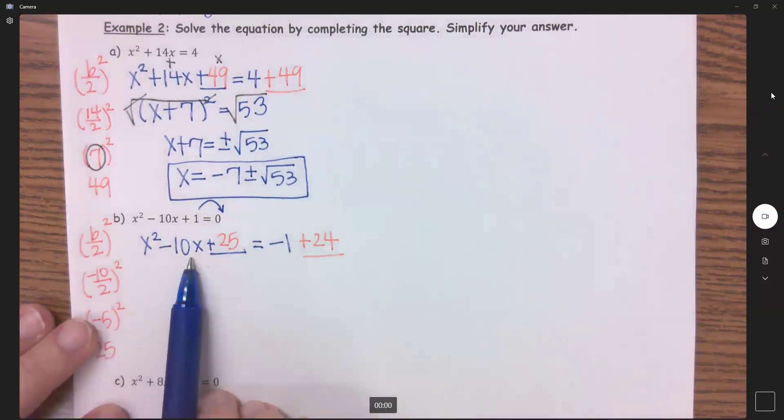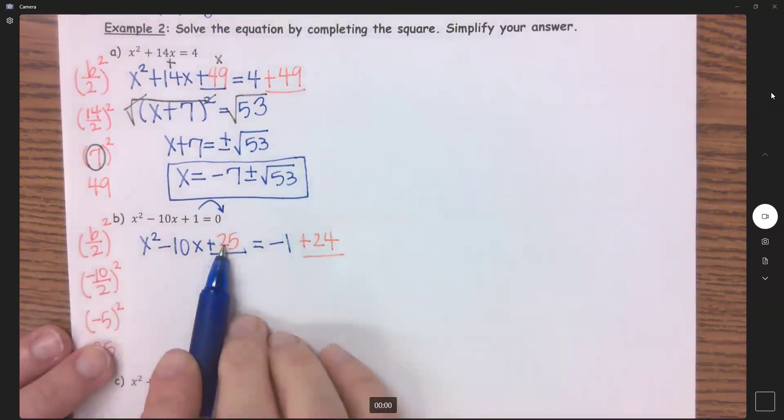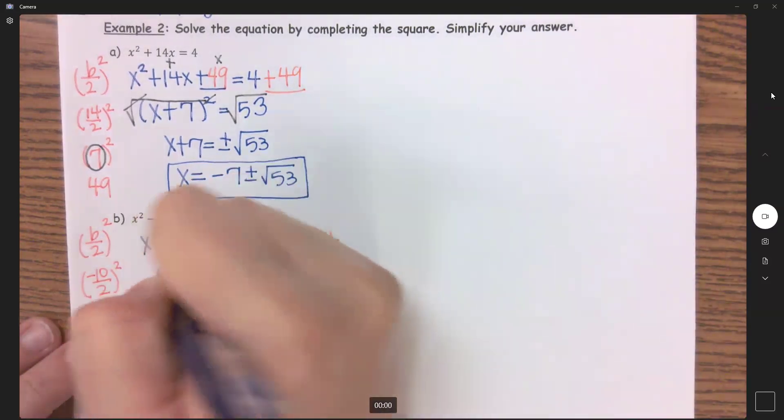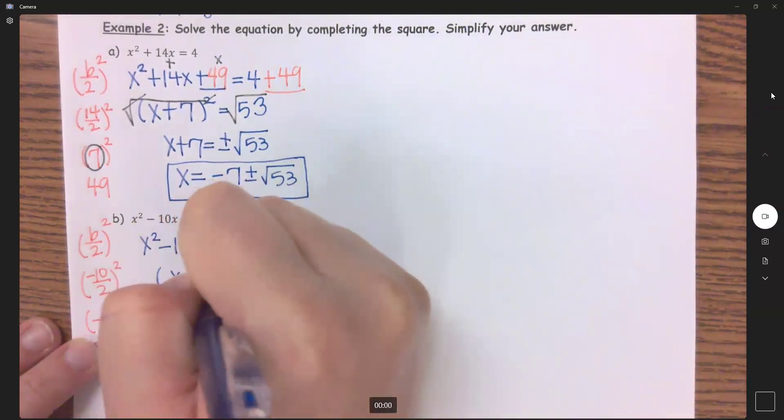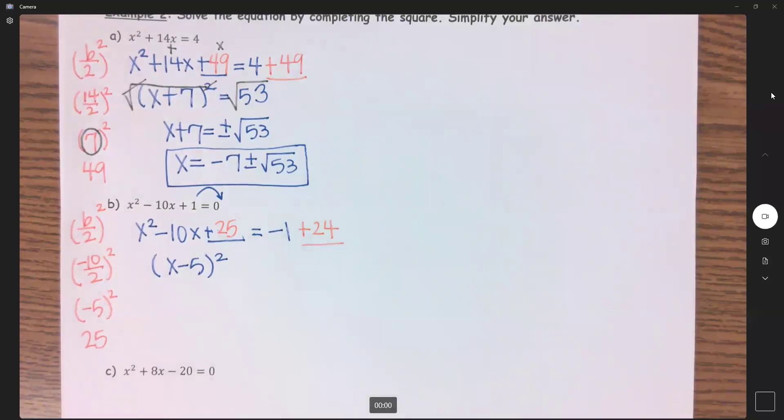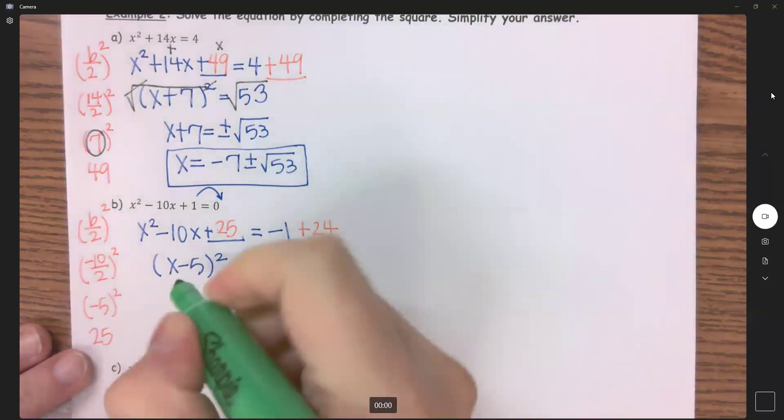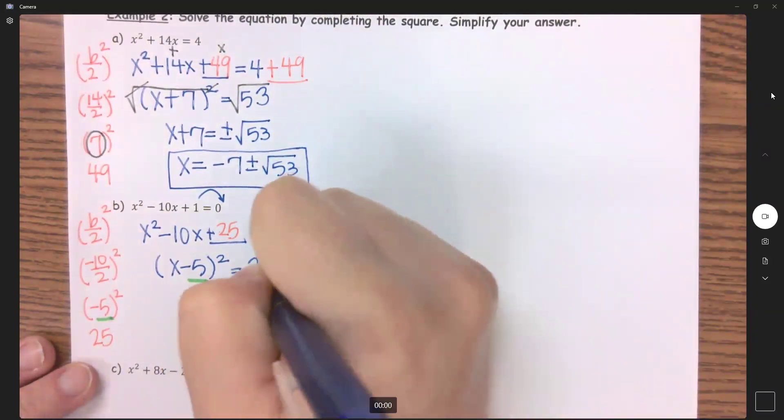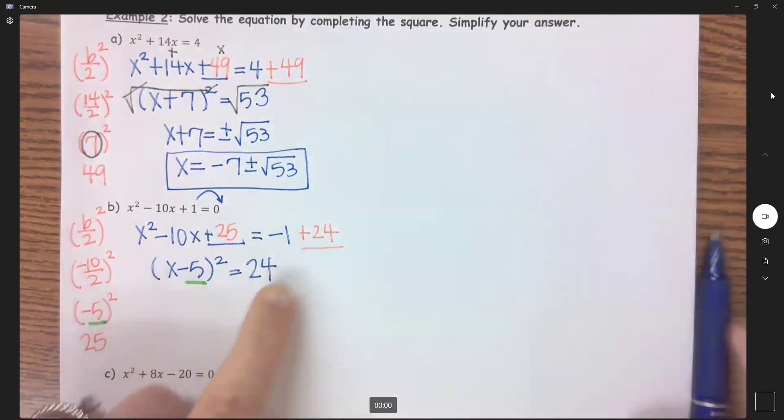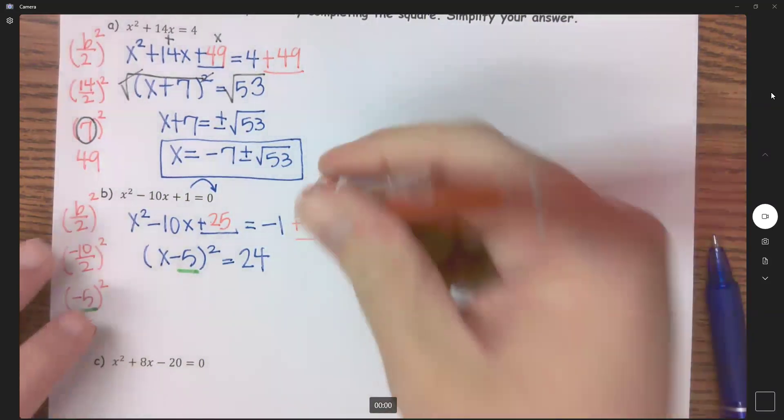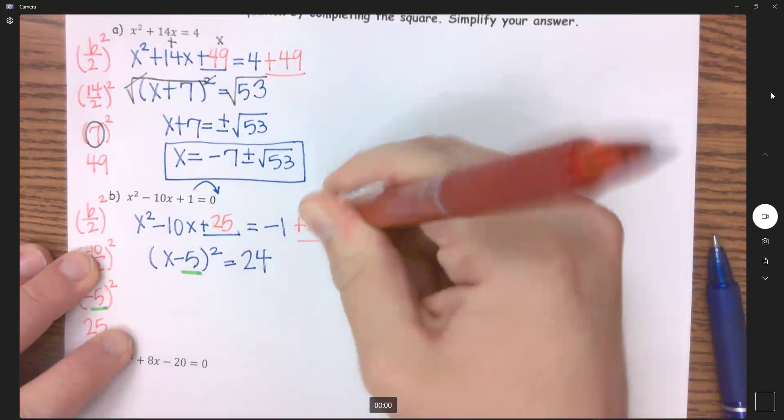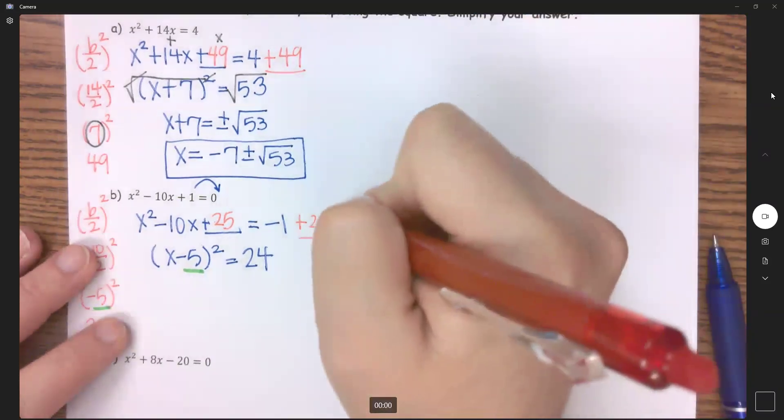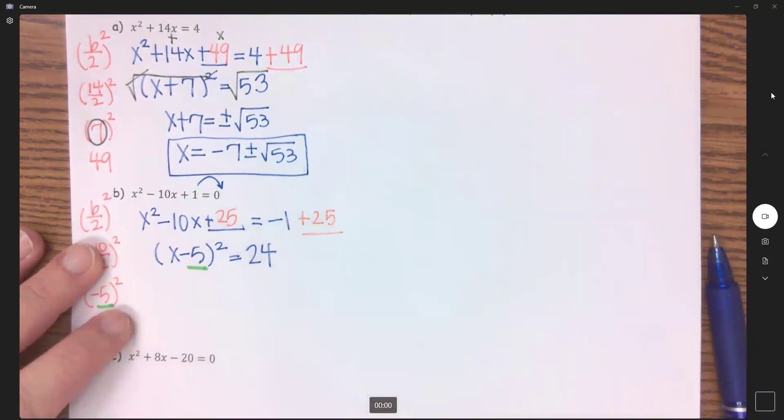Okay, so factor this. What multiplies to 25 but adds up to -10? And that's -5 times -5, which if you notice, I'm going to use a different color here, this is the same as the number I got before I squared it. And that equals, that should be 24. I did my math before I wrote it. So we added 25, and then when I combined, I get 24.